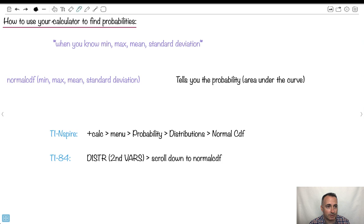So let's learn how to use your calculator to do this. This is when you know the minimum, the maximum, the mean, and the standard deviation, and you want to know the area underneath the curve. Well, what we're going to do is use something called normal CDF. And this will always give you the probability. That's going to be the key thing here. The mean is mu (μ), standard deviation is sigma (σ).